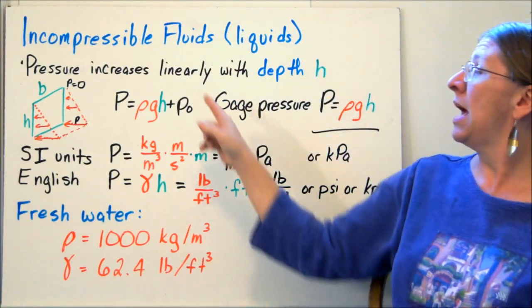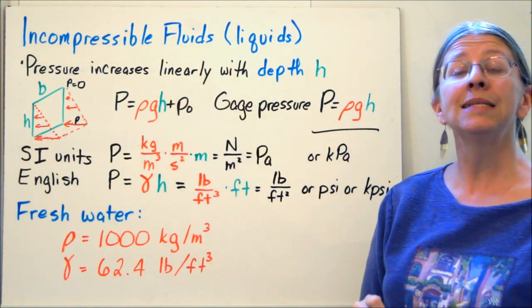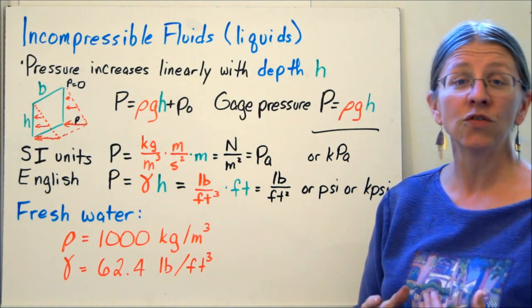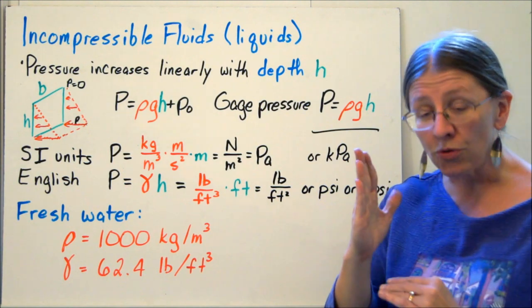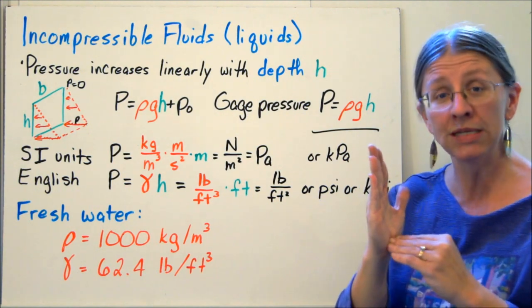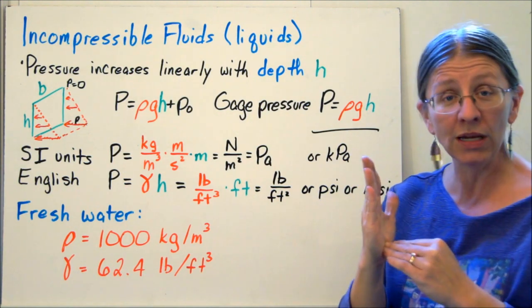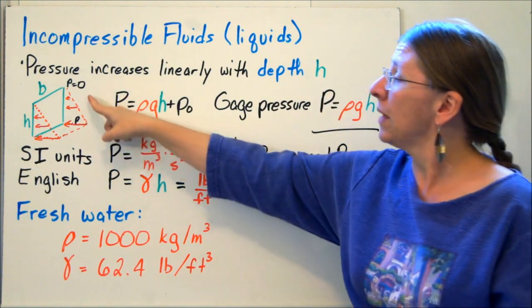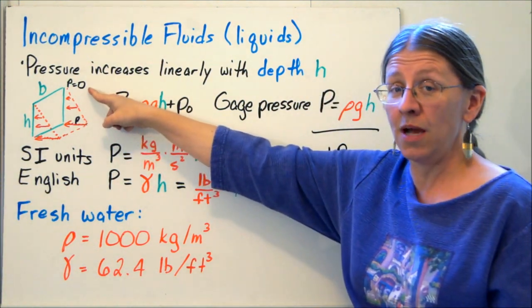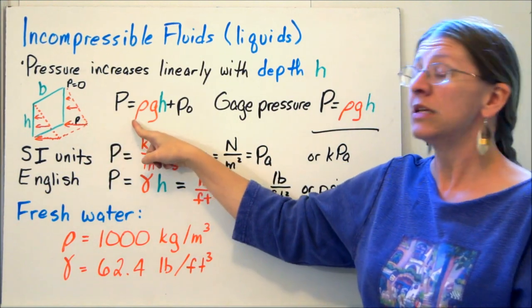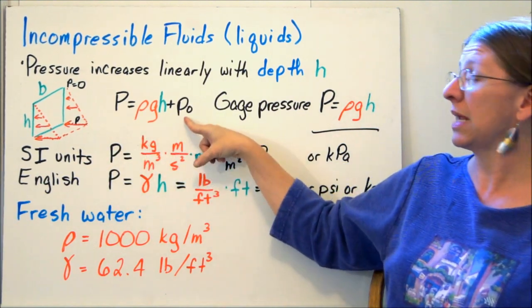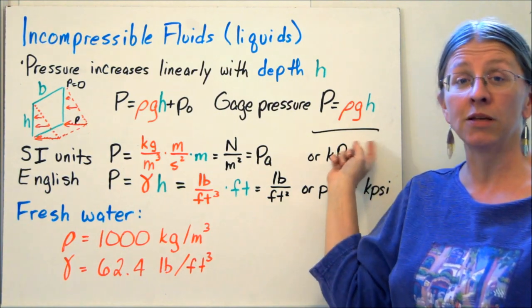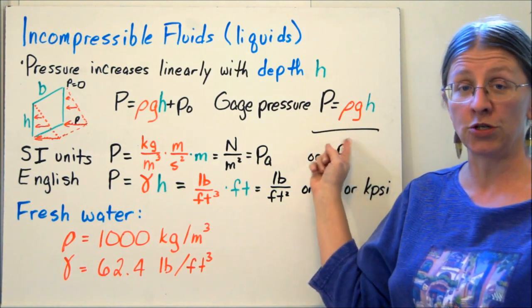In incompressible fluids, the pressure increases linearly with depth. So at the surface of the pool, the gauge pressure is zero. But as you go down in the pool, the pressure increases. If you go down three feet, it's ρg times three. Here, my pressure is zero at the top. My pressure is going to increase linearly. So pressure is ρgh plus ambient, or gauge pressure is ρgh. This is the formula you need to have at your fingertips for fluid pressure liquids.